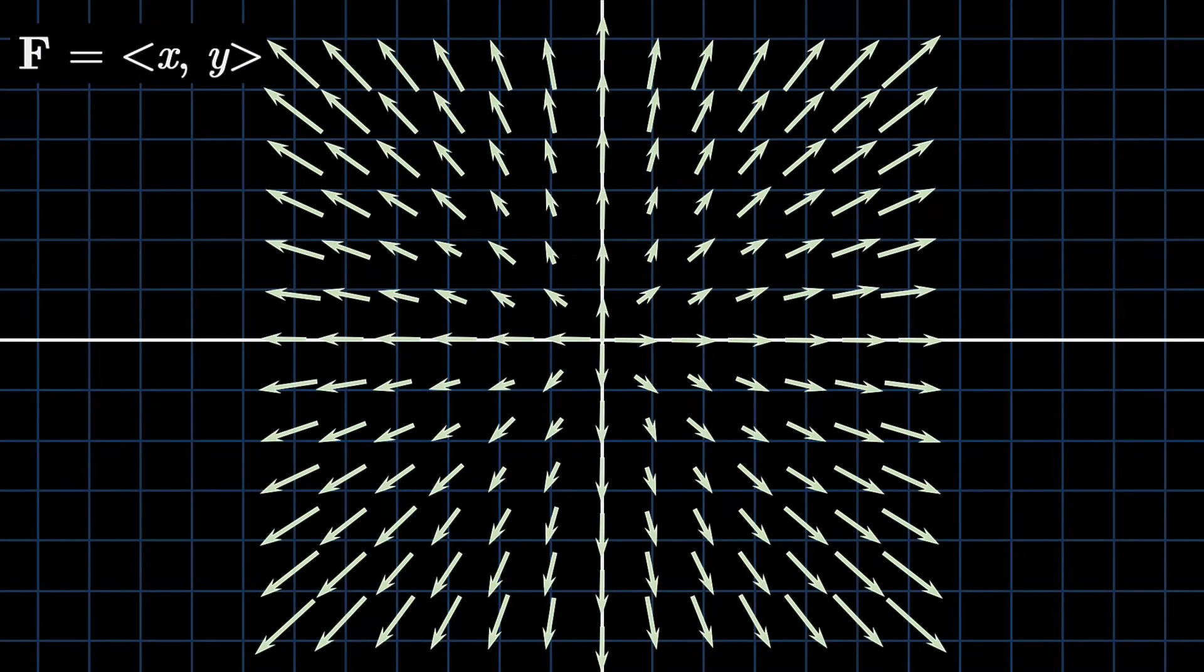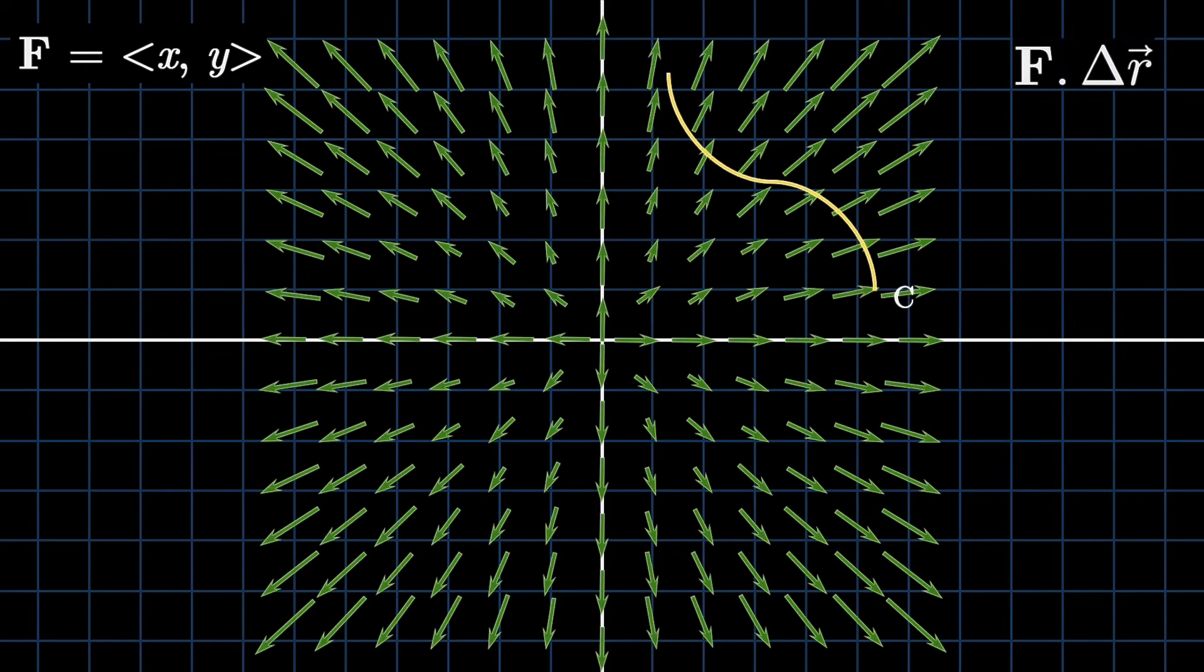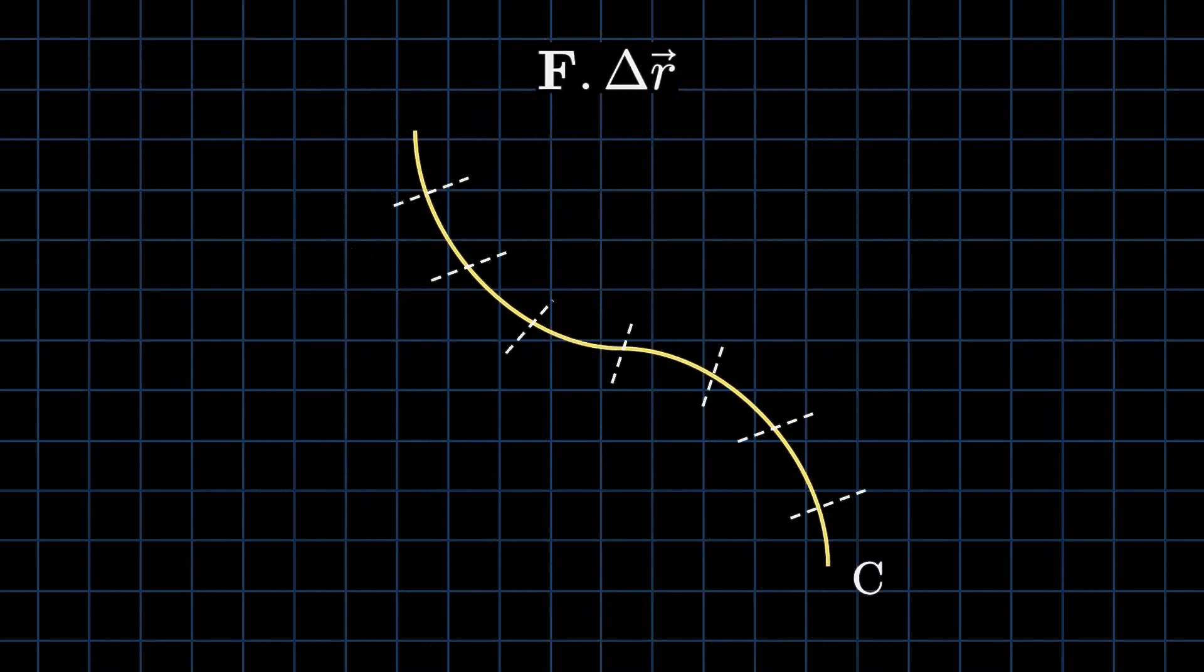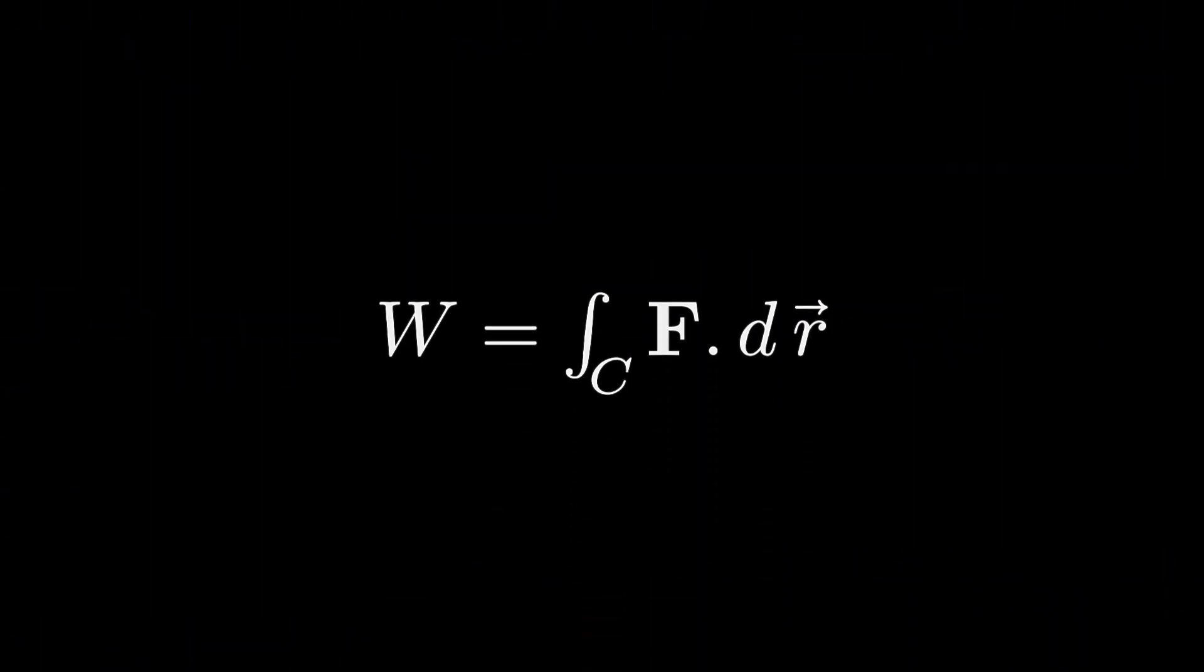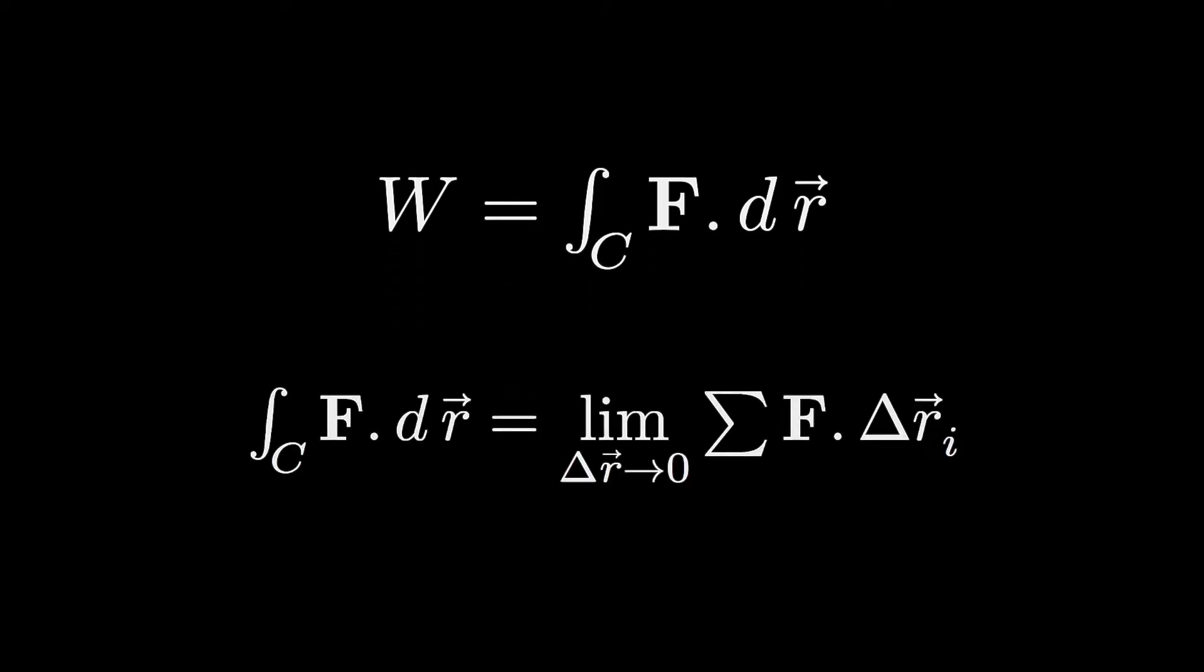Path integrals calculate the work done by a vector field on a certain path. The work done equals force multiplied by distance, which we denote as F · Δr, where Δr is the vector from the old point to the new one. Let us cut our path into small pieces to simplify matters as the following. For each of them, we will be having a vector and a force. If we sum them up, we will get our original path. So let's call the path C and the work done W equals the path integral over the path C of F · dr. This is work.